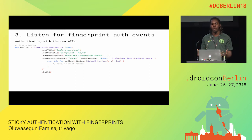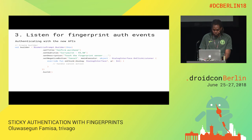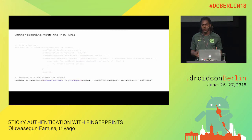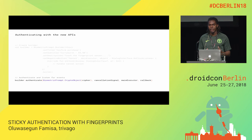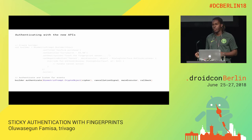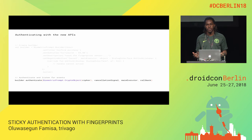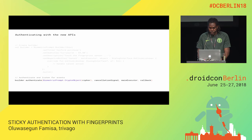Or you want to provide a fallback form of authentication for them. To actually do the authentication process, you just need to pass the cipher we created, the cancellation signal, an executor, and the callback. The executor is used to return the results — it's like the thread on which you want to get your results and errors.